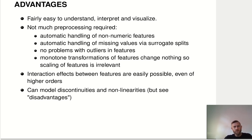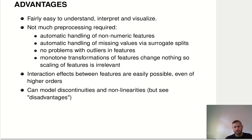Trees are also absolutely robust against outliers in the features, because we're basically just looking at step functions and where to split the data. It really doesn't matter whether we have some feature values that are way off and far away from all the rest of the data — it doesn't affect the fit at all.